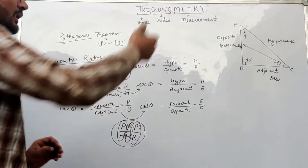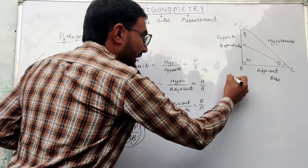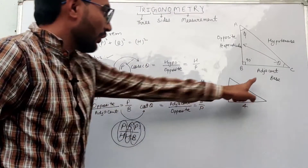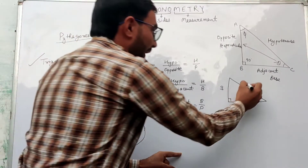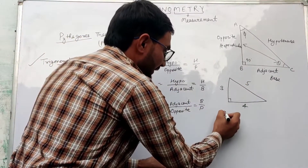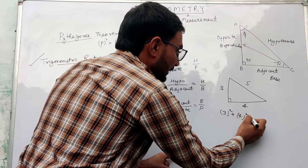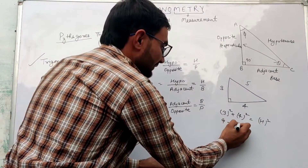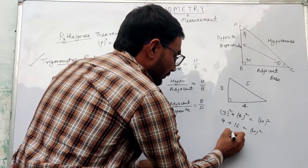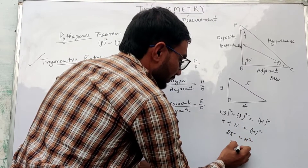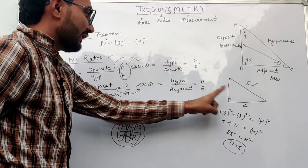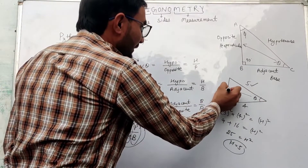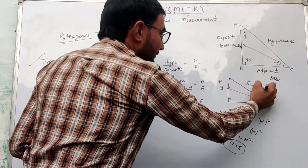Now let us take an example of a triangle in which one side is 3 and another side is 4. So what will be the hypotenuse? Using Pythagoras theorem: 3 squared plus 4 squared equals x squared, which means 9 plus 16 equals hypotenuse squared, so 25 equals hypotenuse squared, and hypotenuse equals 5. So the sides are 5, 3, and 4. If we take this angle as theta, then this side will be perpendicular, this will be base, and this will be hypotenuse.